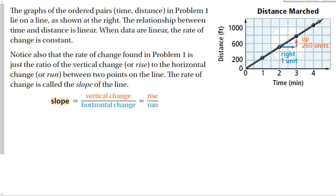We use rate of change more commonly with a concept called slope. The graphs of ordered pairs like time and distance lie in a line. When data is linear, the rate of change is constant. The rate of change from problem one is the ratio of vertical change (rise) to horizontal change (run) between two points on the line — going up 260, right 1. This rate of change is called slope: slope equals vertical change over horizontal change, or rise over run.